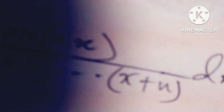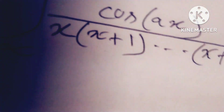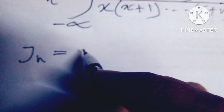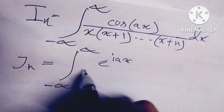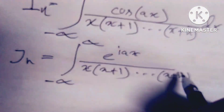So friends, I define Jn as the integral from minus infinity to infinity of e^(iax) divided by x(x+1)....(x+n) dx, so that the original integral equals the real part of Jn.